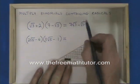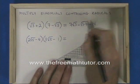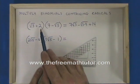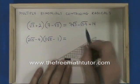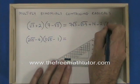Inside terms: 2 times 7, that's 14. And then last term times last term, 2 times negative root 3 gives minus 2 root 3.